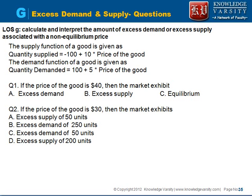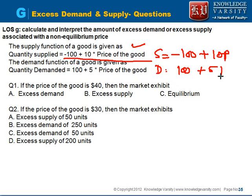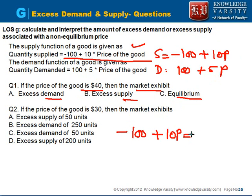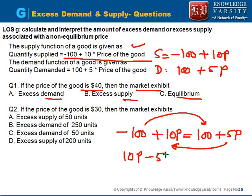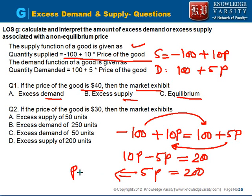Consider this practice question: supply is given as Qs = -100 + 10P, and demand as Qd = 100 + 5P. To find equilibrium, set them equal: -100 + 10P = 100 + 5P, which gives 5P = 200, so P = 40. When the price is $40, we are at equilibrium.